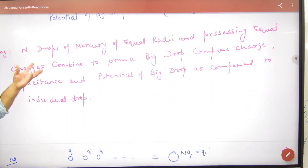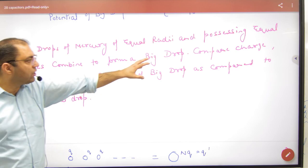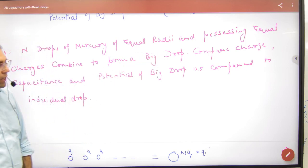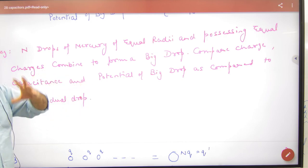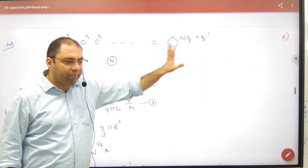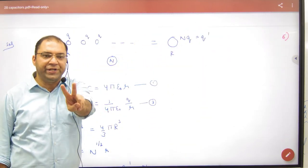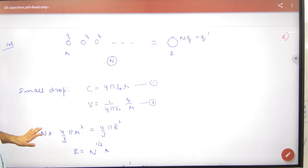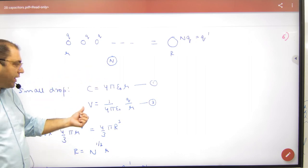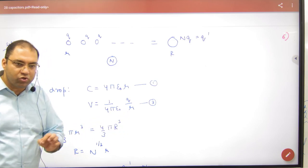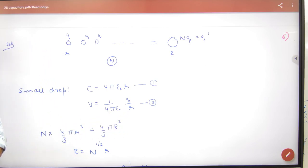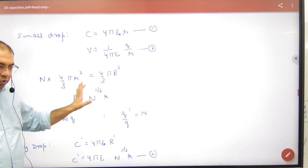n drops of mercury of equal radii, equal charge, form a big drop. So what will happen? Compare charge, capacitance, potential of bigger drop as compared to smaller drop. Rule number 1: small drop combine, big drop, so charge n into q. Volume equate, so radius ratio. Potential also.